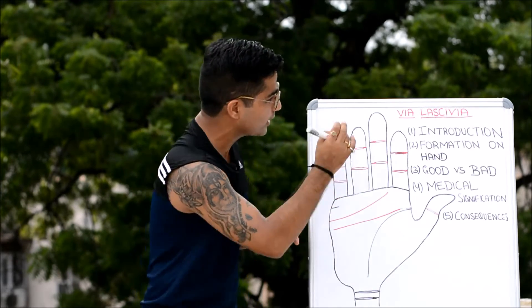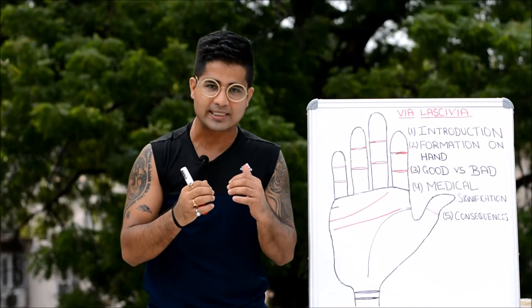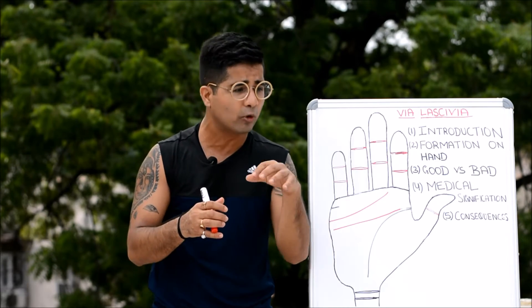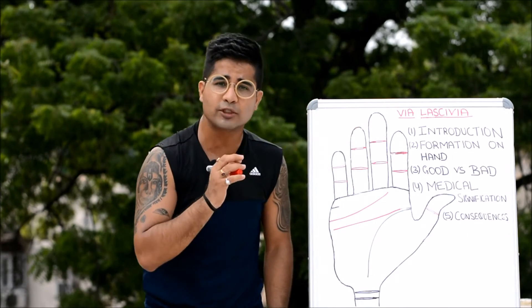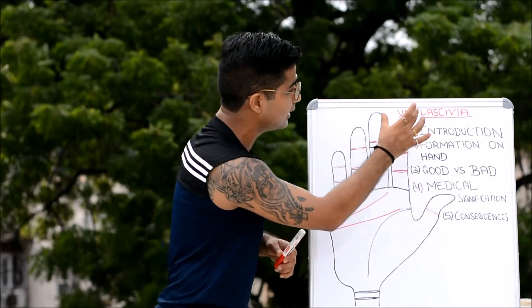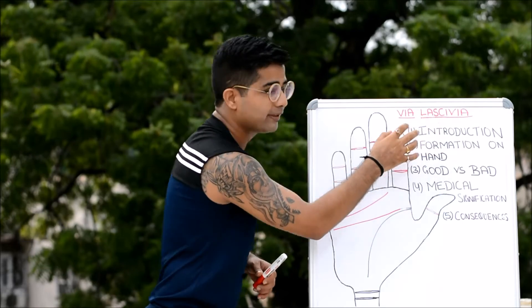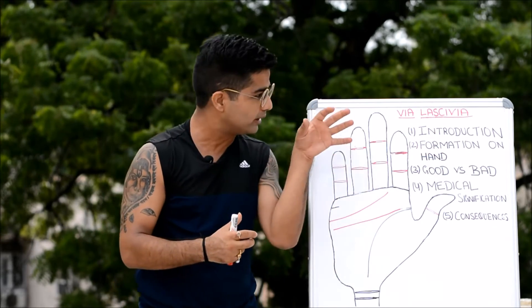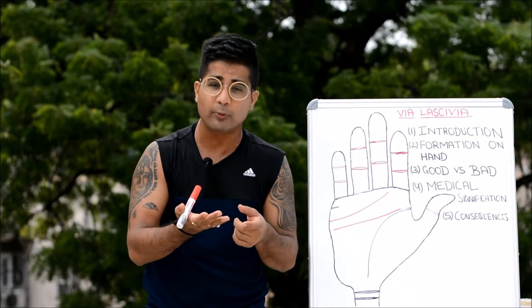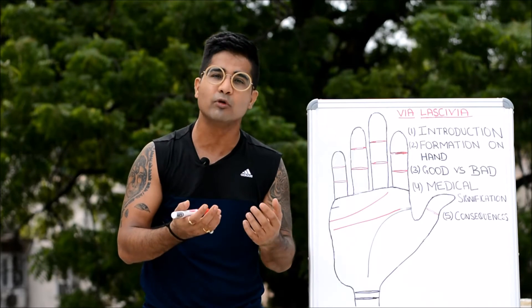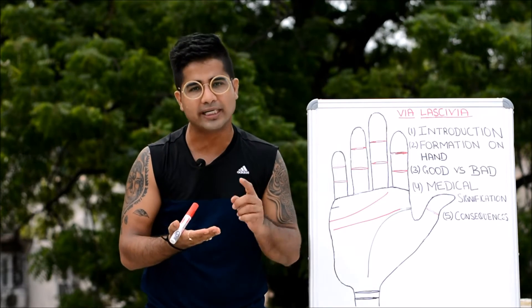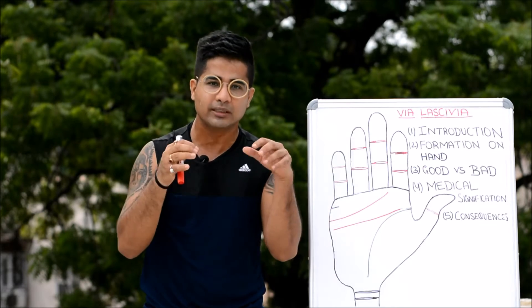Now we start our discussion on the via lascivia. A lot of contradictory things have been written in different books by different palmists, and over the internet you will also find very different definitions of this line. The most confusing part is the name itself — lascivia. In general, the definition given is that if this line is present on the hand, it would make someone very lascivious — very much preoccupied with lustful thoughts and susceptible towards temptation, alcohol addiction, and drug addiction. That is true to an extent, but there is another side to it as well.